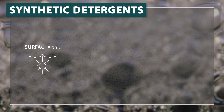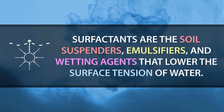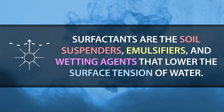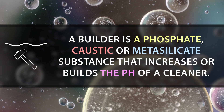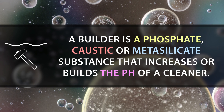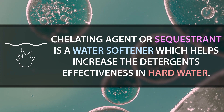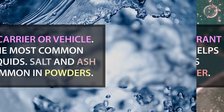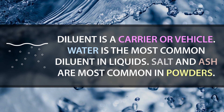Modern cleaning chemical solutions, for the most part, are made up of synthetic detergents, as they are better cleaners and don't leave an alkali residue like soap does. Synthetic detergents have several basic ingredients: surfactants, builders, chelating agents, and diluents. Surfactants are the soil suspenders, emulsifiers, and wetting agents that lower the surface tension of water, essentially making the water wetter. A builder is a phosphate, caustic, or metasilicate substance that increases or builds the pH of a cleaner. A chelating agent, or sequestrant, is a water softener which helps increase the detergent's effectiveness in hard water. Diluent is a carrier or vehicle — water is the most common diluent in liquids, while salt and ash are the most common in powders.